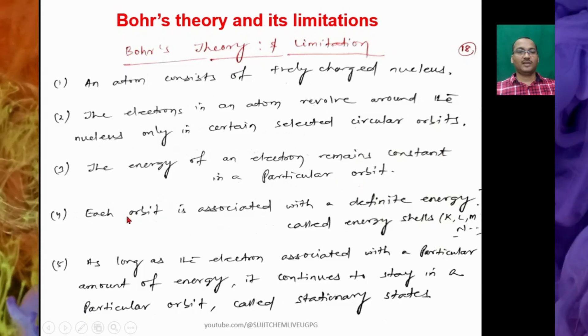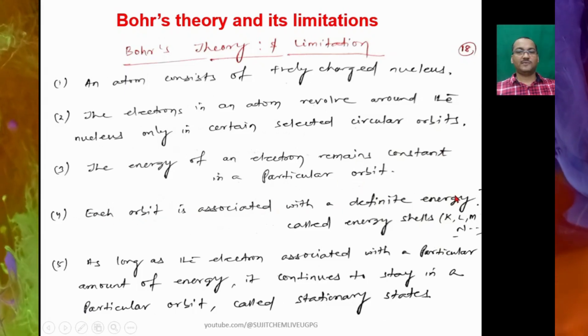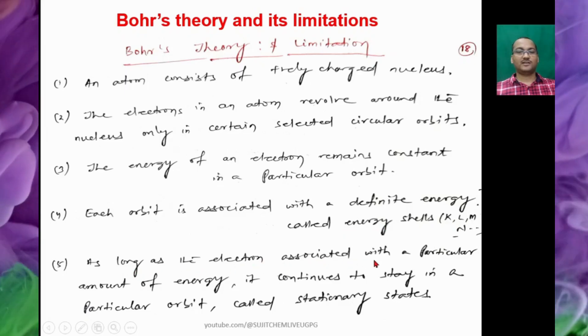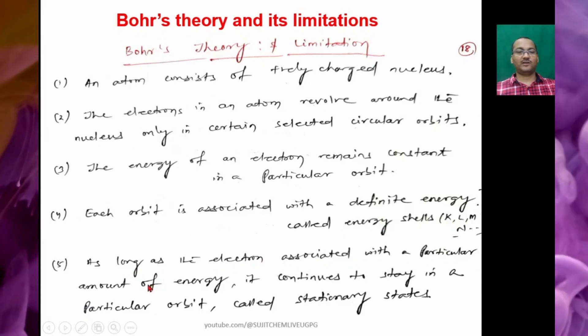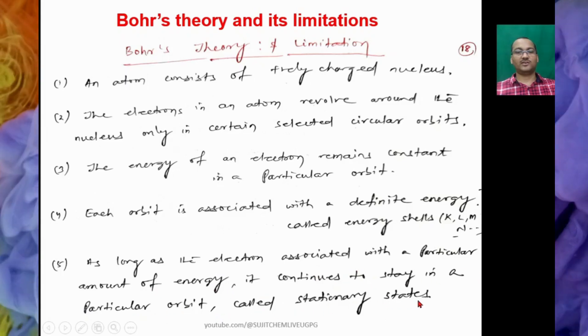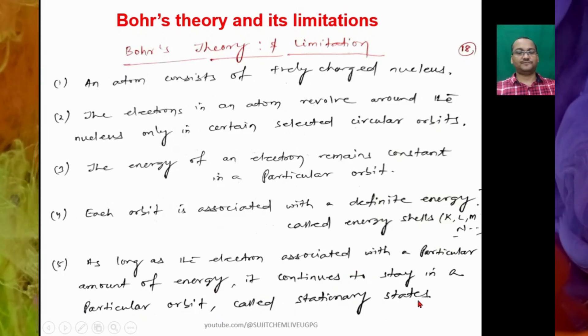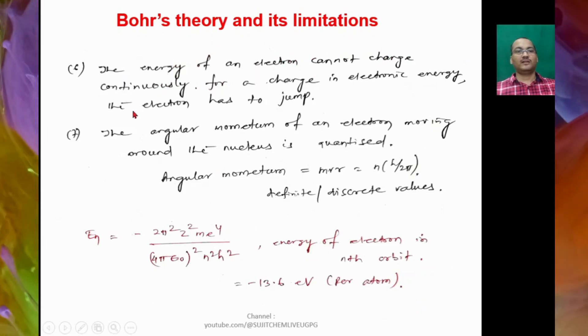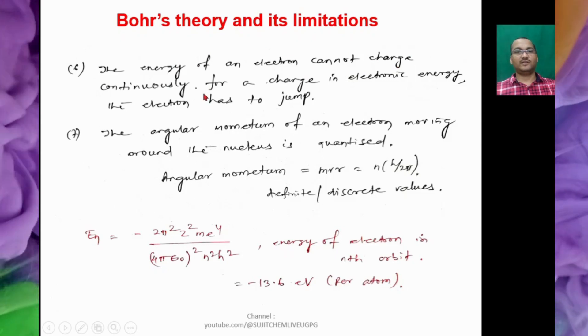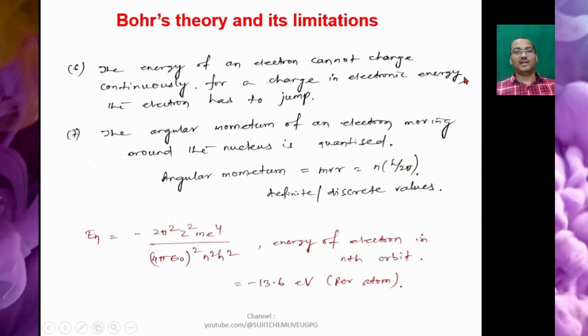Each orbit is associated with a definite energy called energy shells like K, L, M, N shells. As long as the electron is associated with a particular amount of energy, it continues to stay in a particular orbit called stationary orbits or stationary states. The next point is the energy of an electron cannot change continuously. For a change in electronic energy, the electron has to jump.